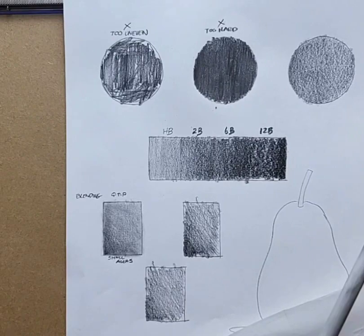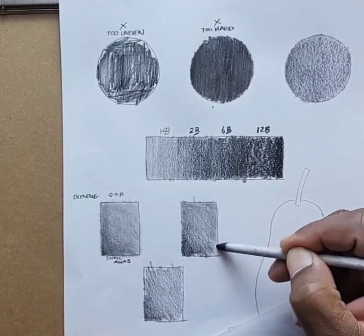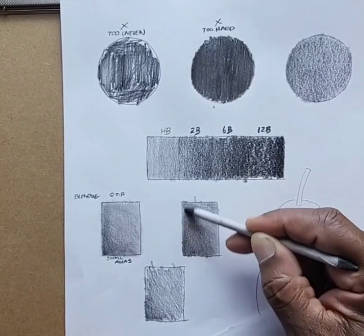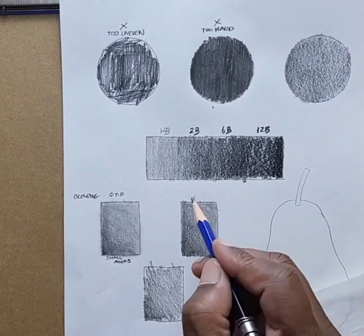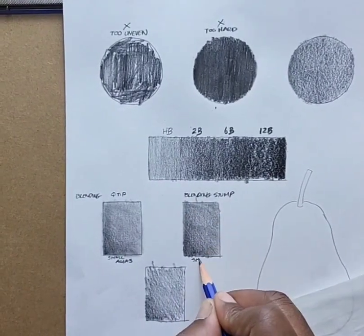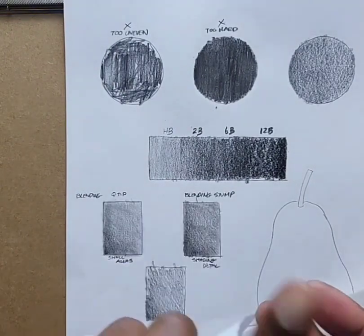Then I'm going to show you a stump. A stump is great for me for details. It doesn't really cover the lines, but it does blend as you can see, and you have a little bit more control, such as the Q-tip.